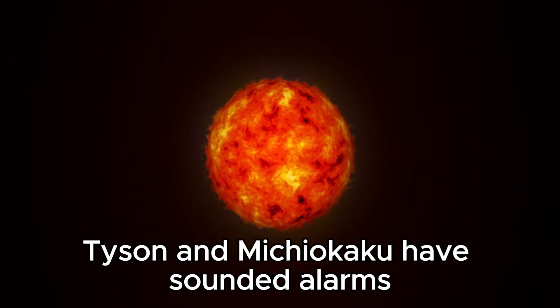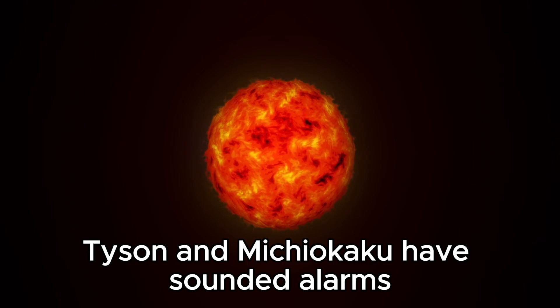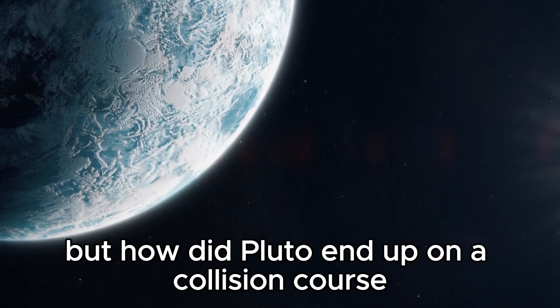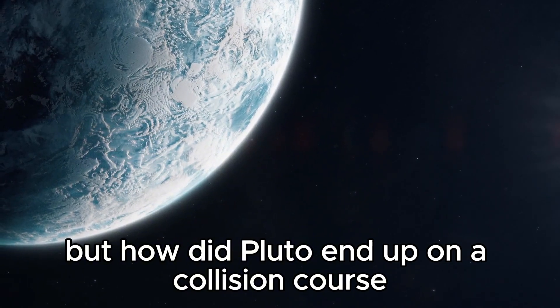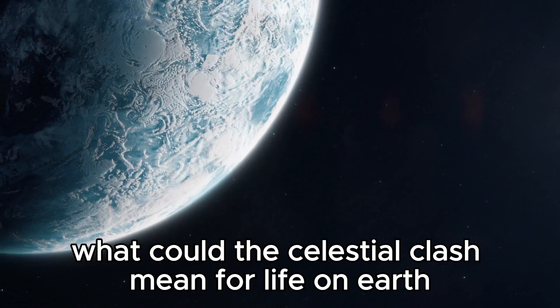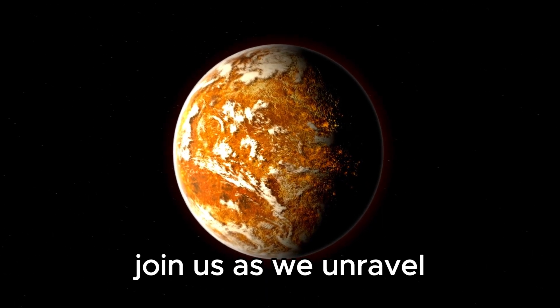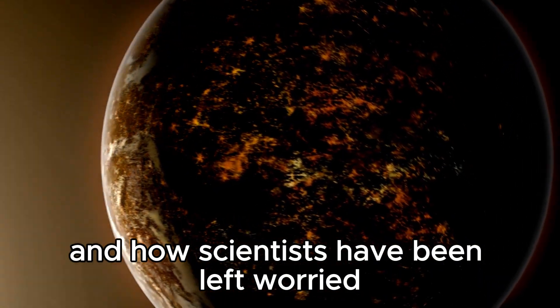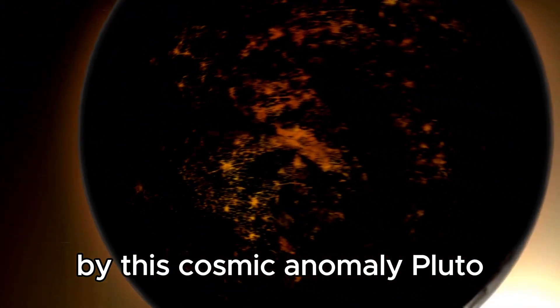Notable figures like Neil deGrasse Tyson and Michio Kaku have sounded alarms about the implications of this cosmic event. But how did Pluto end up on a collision course with its neighboring planet, and what could the celestial clash mean for life on Earth? Join us as we unravel how something massive just collided with Neptune and how scientists have been left worried by this cosmic anomaly.